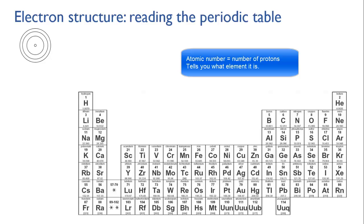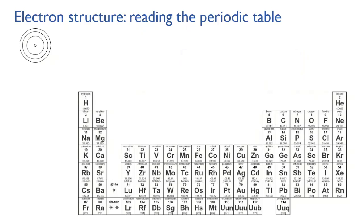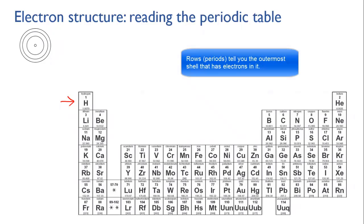If somehow the number of protons in an atom changes — and it takes a nuclear reaction of some kind for that to happen — then the atom becomes a new element. But why not just have one long row of elements? Why make it into a table? The rows of the periodic table, which are called periods, tell you which electron level is the outermost in that atom.